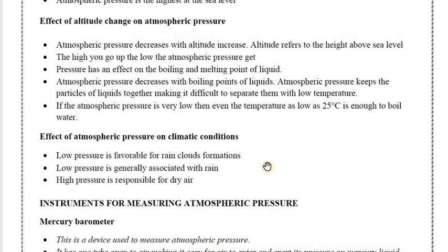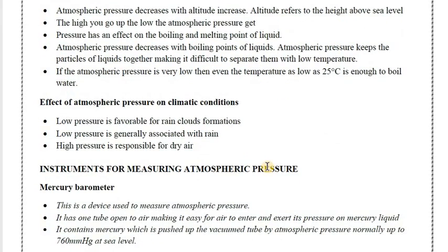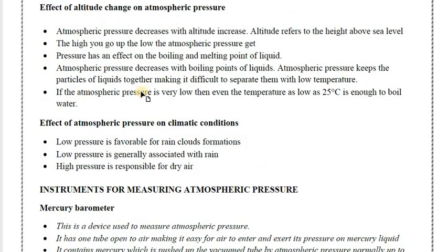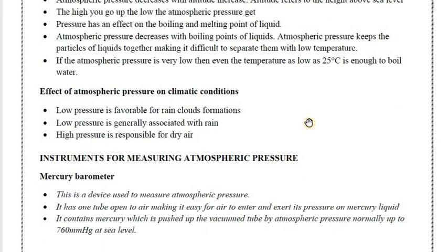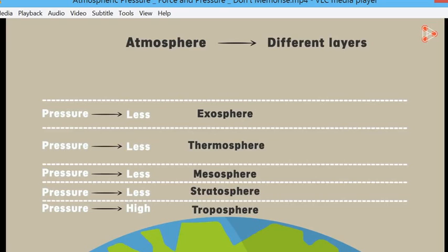So there are these effects of altitude on pressure, and then there are effects on things like boiling points. If the atmospheric pressure is very low, then the boiling point is going to be very low as well. So if you were to go into space — as you leave the Earth's surface and go to the mesosphere or thermosphere — the boiling point of water would be much lower because of the reduced atmospheric pressure.